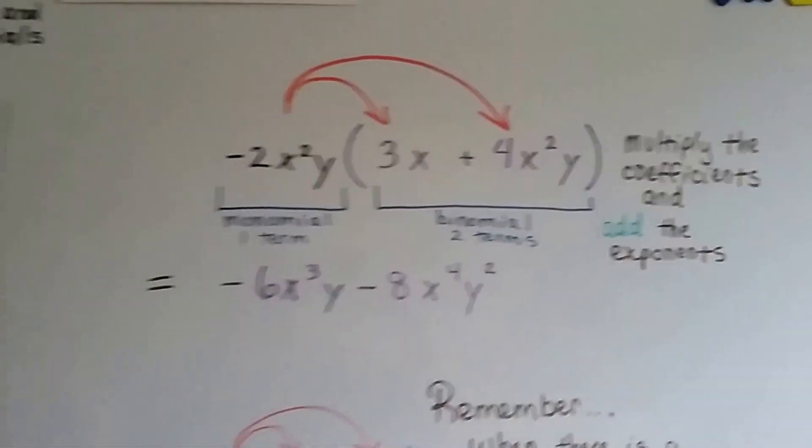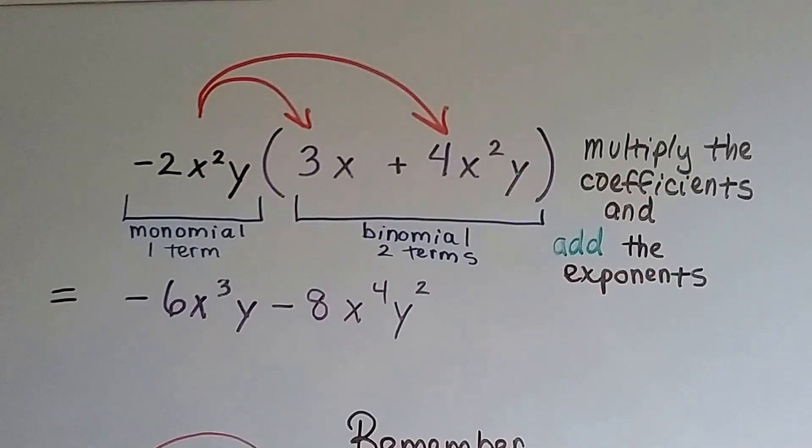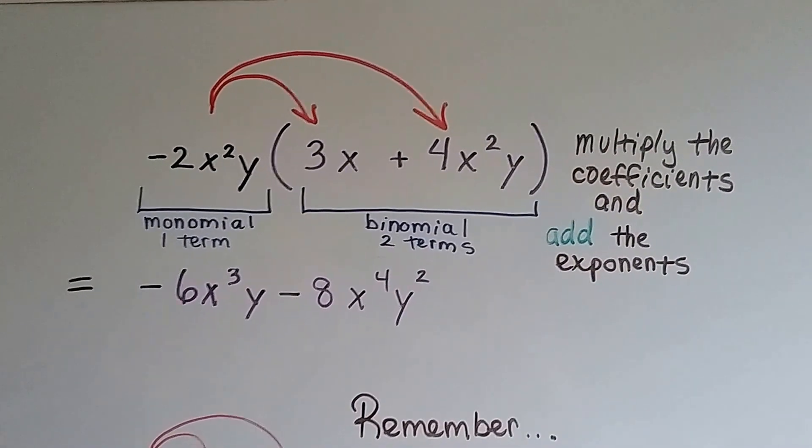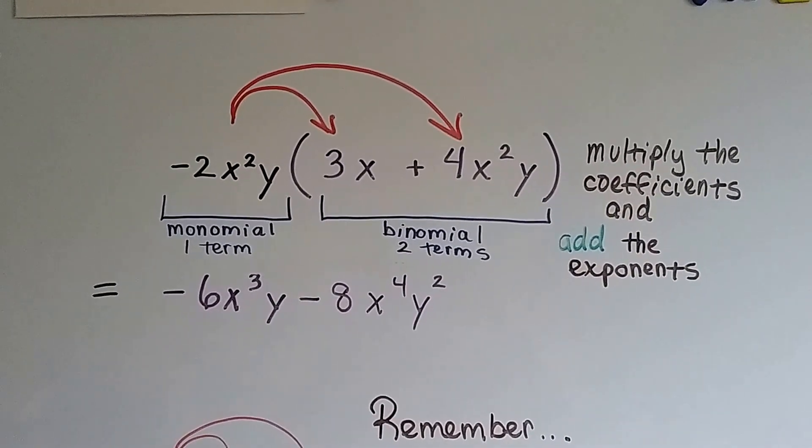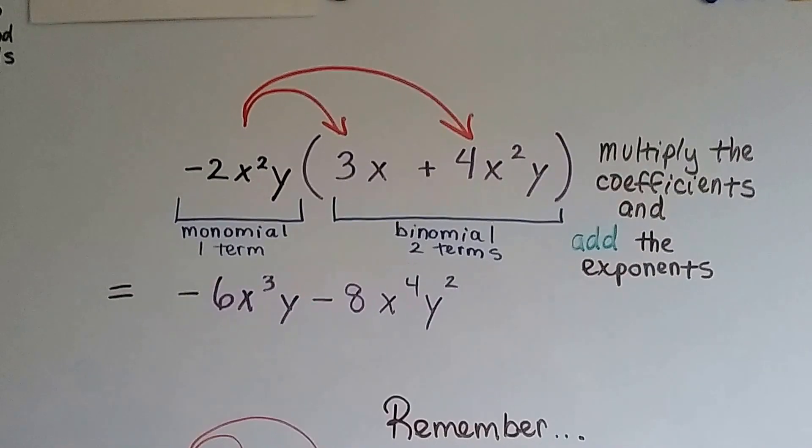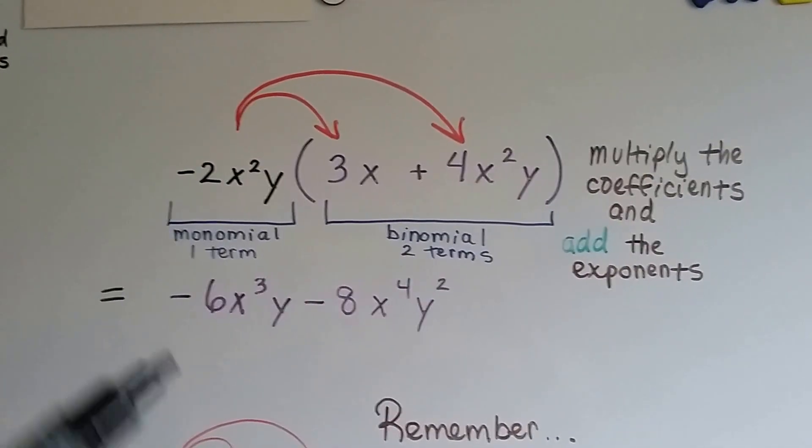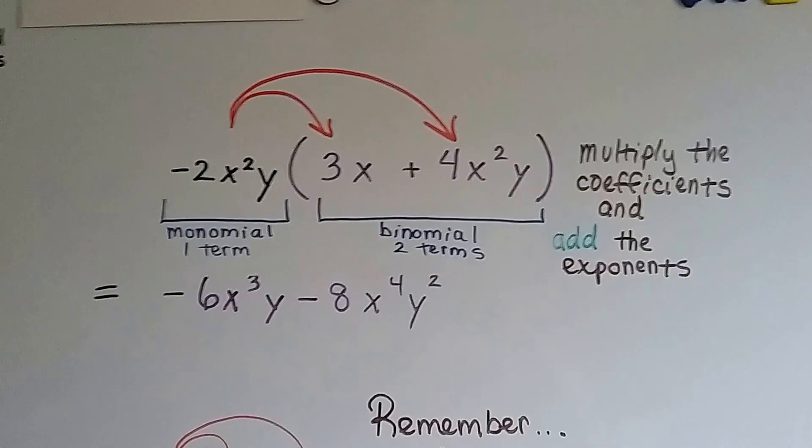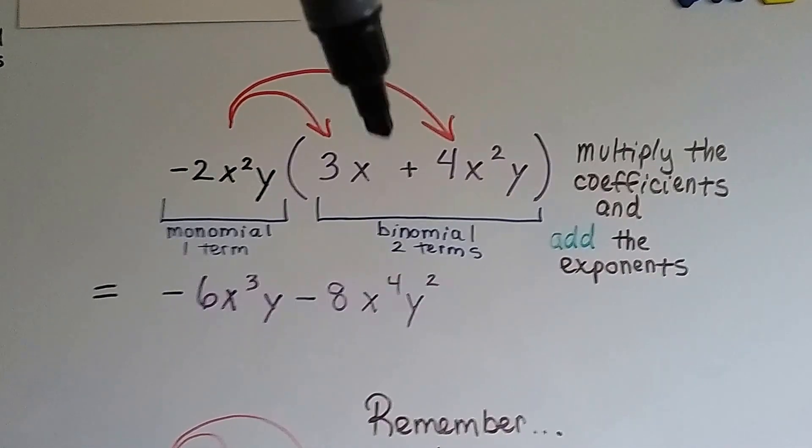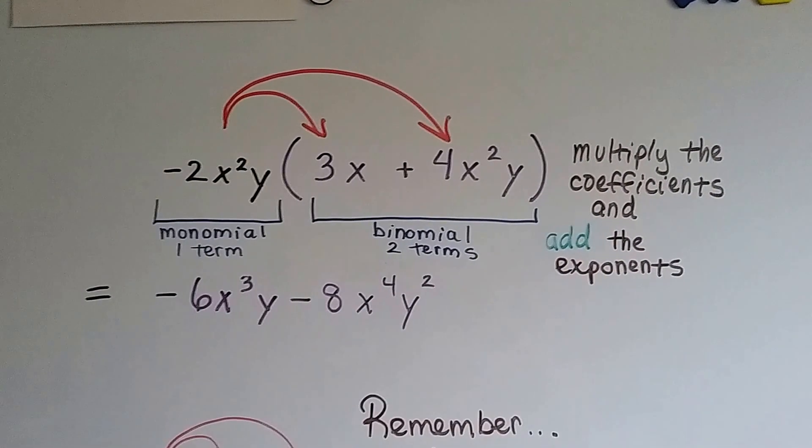And take a look at this one. We've got a negative term that we're going to use as a monomial. It's a negative monomial that we're going to multiply to a binomial. We've got one term, a monomial here, and we're going to multiply it to this two-term binomial. And remember, the terms are separated by a plus or minus sign. And that's how we know.